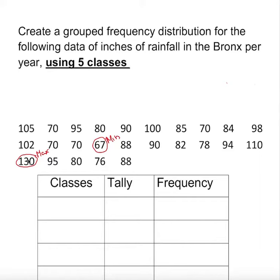I can start with the minimum number or a number convenient to this minimum number. I can start at 65. My first class should start with the minimum number or a number below that which is convenient. So I'm going to start with 67.